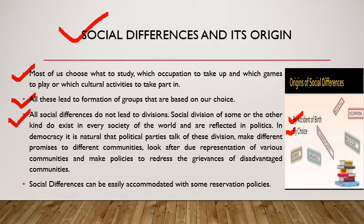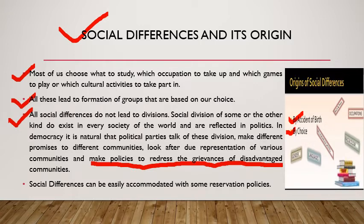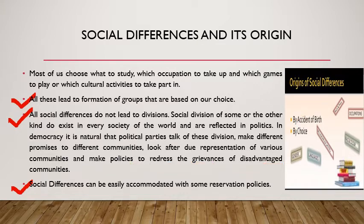Not all social differences lead to divisions. Social divisions of some kind exist in every society of the world and are reflected in politics. In a democracy it is natural that political parties talk of these divisions, make different promises to different communities, look after due representation of various communities, and make policies to redress the grievances of disadvantaged and backward communities. Social differences can be accommodated with reservation policies. Social differences become division only when expressed in politics.